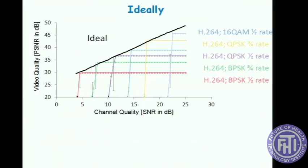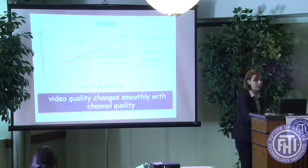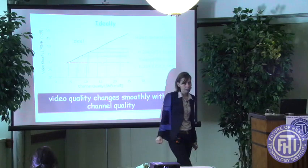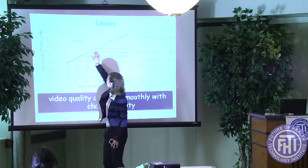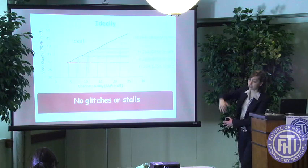Ideally, we would like a different curve — one where video quality has a smooth degradation as channel quality degrades. It doesn't fall off a cliff. Not only this, but it is the best for any channel quality — much better than these cliff curves, and smooth. If we can achieve this video quality, then we will have no glitches and no stalls, because there is no cliff to fall off from.